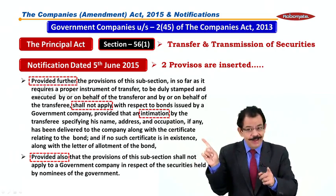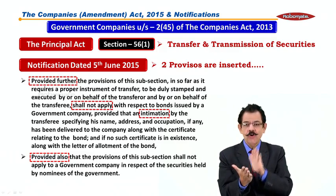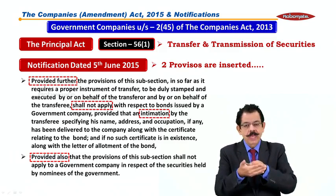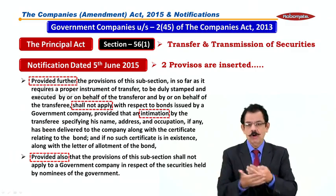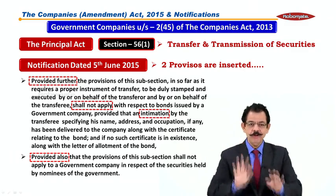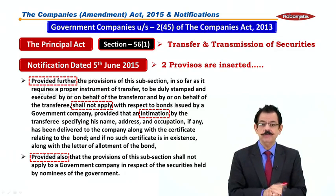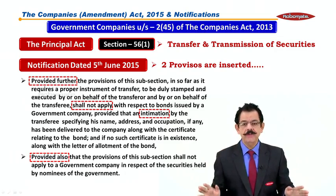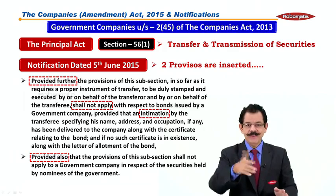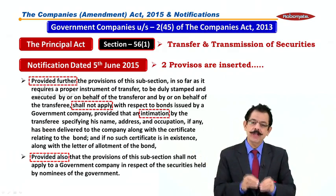Provided that an intimation by the transferee specifying his name, address, and occupation (if any) has been delivered to the company, along with the certificate relating to the bond. If no such certificate is in existence, then the letter of allotment of the bond, attached together, must be given to the company — the company will do the needful. So the instrument of transfer Form SH-4 is removed here; only intimation is required.